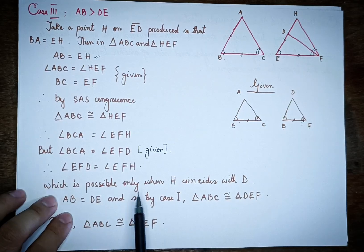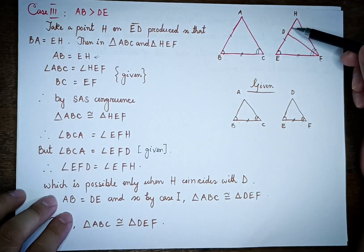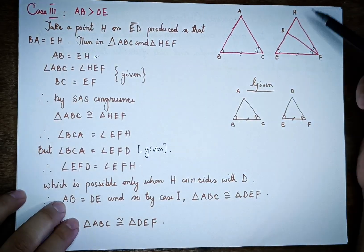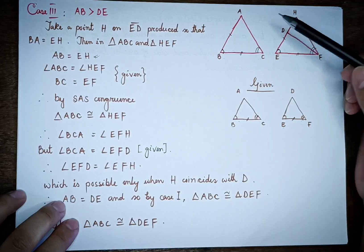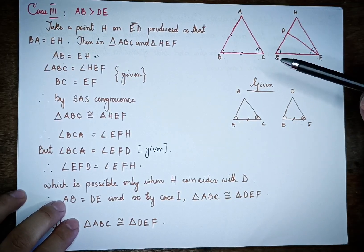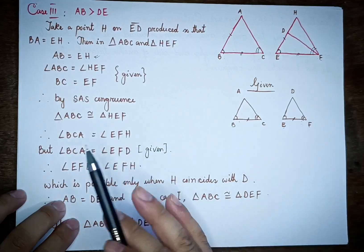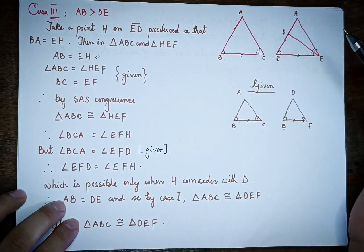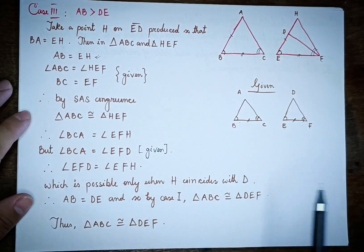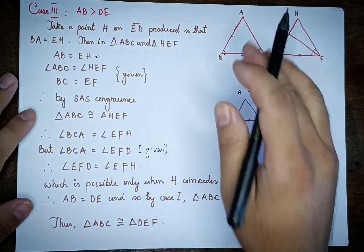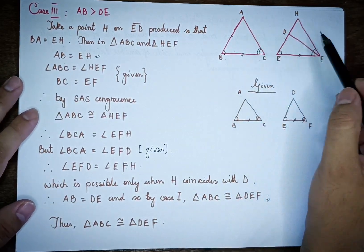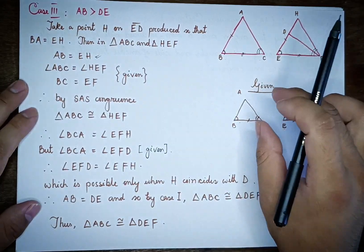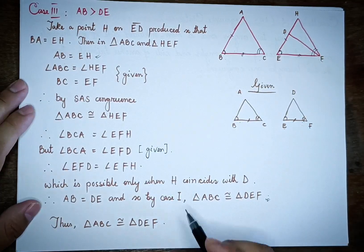This is possible only when H coincides with D. When H coincides with D, AB equals DE, which contradicts our Case 2 assumption. Therefore, triangle ABC and triangle DEF are congruent, which completes the proof.